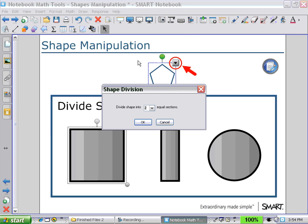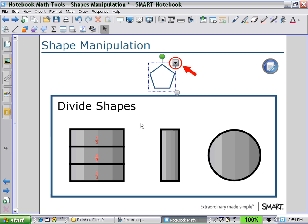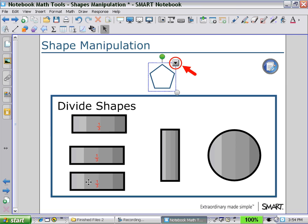So selecting shape division and choosing three sections, we can divide our square into thirds, and we can separate them to show the students the different sections.